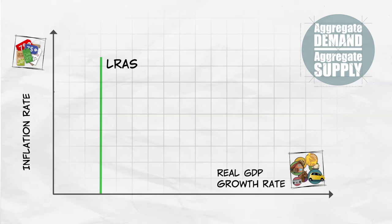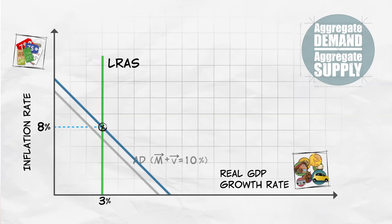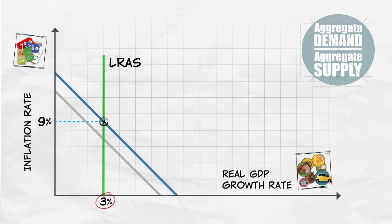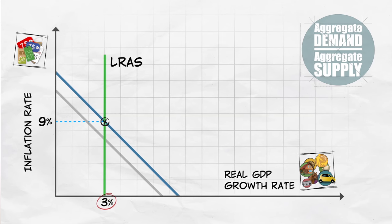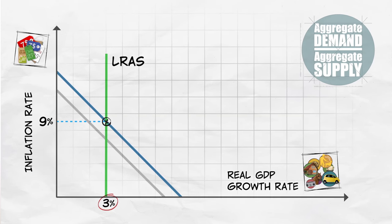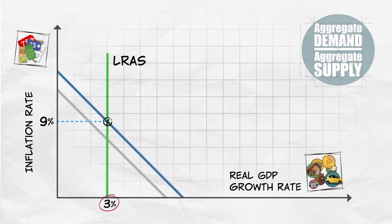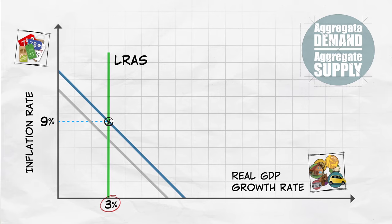In the model so far, a shock to the AD curve can change the inflation rate, but not the growth rate. That's a good prediction for the long run. In the long run, changes in spending don't change the fundamental factors of growth, and so they won't change the long run growth rate. But it's not a good prediction for the short run.